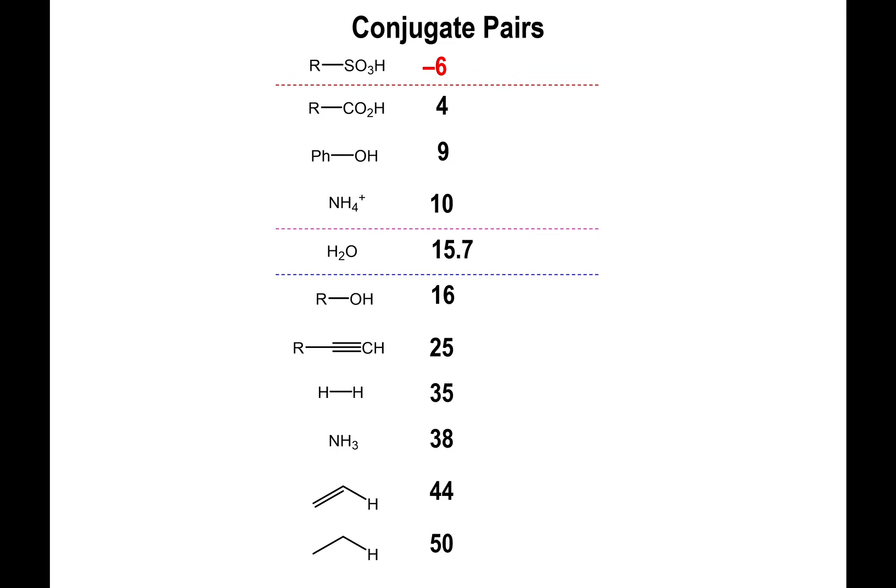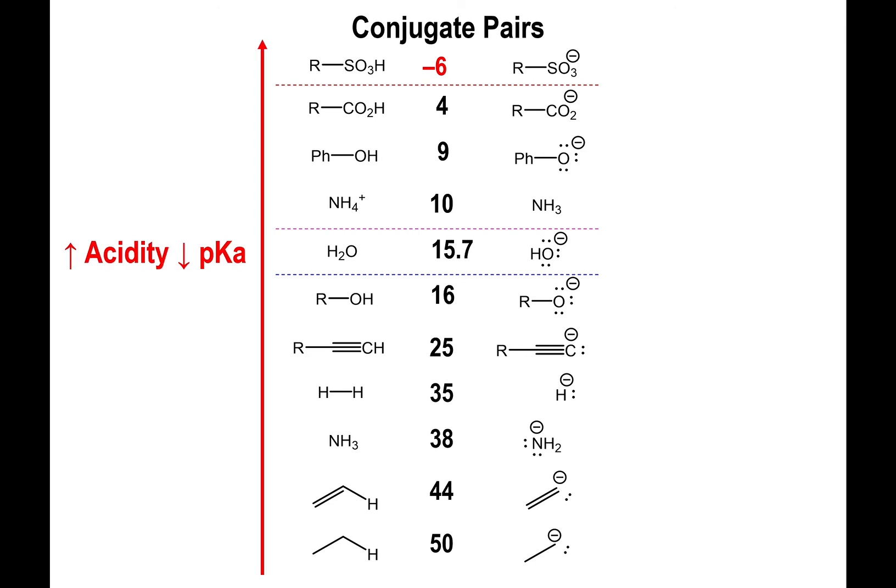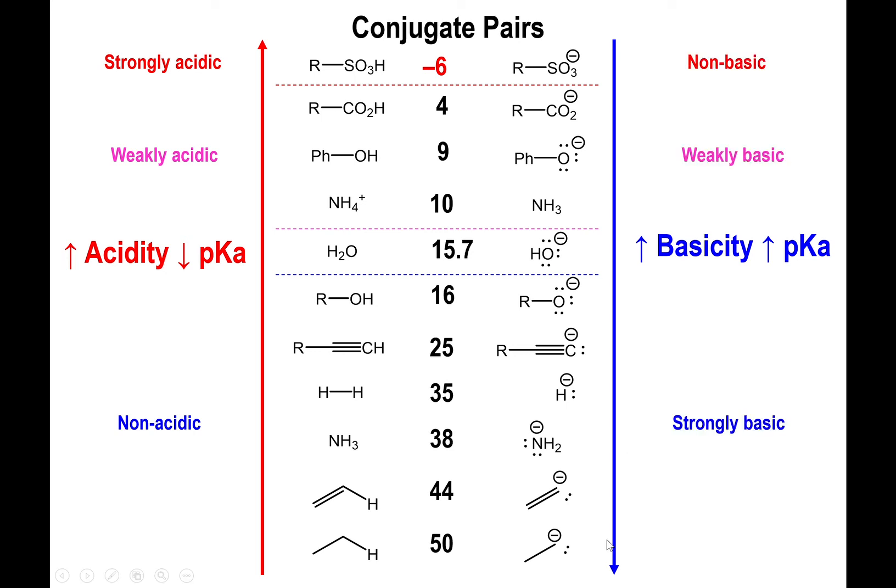Let me get to this idea of conjugate pairs. If you take every single conjugate acid and draw the corresponding conjugate base—remove an H, decrease the value of the charge by one—you end up with sulfonates, carboxylates, phenoxides, ammonia, hydroxide, alkoxide, carbanions, hydride. These are all the conjugate bases. What was true of acidity is also true of basicity, but in the opposite direction. Whereas the strongest acid is present at the top of the table and the weakest acid at the very bottom, the strongest base is actually present at the very bottom. Carbanions of alkanes are the strongest type of bases in organic chemistry we can have, whereas sulfonates are technically non-basic substances because they derive from very strong acids.